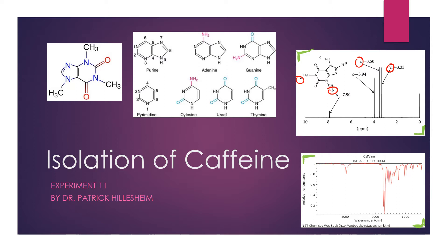Set of proton C is your other methyl group, a little bit more downfield from A and B because they are attached to a nitrogen. So again, we should expect to see an integration of three — a little bit of a broader peak likely — but another singlet with an integration of three.